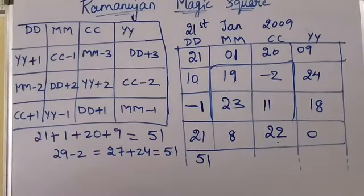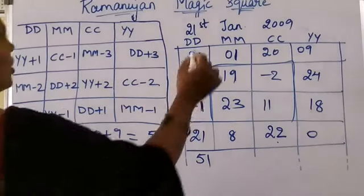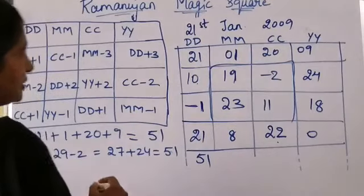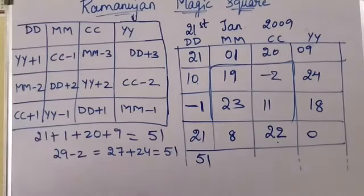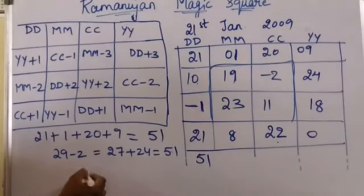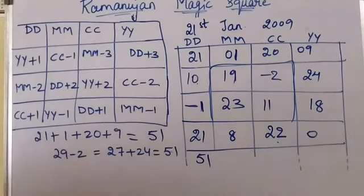So by using your date of birth, you can create your own Ramanujan magic square. It's very interesting — everyone try it using your own date of birth!